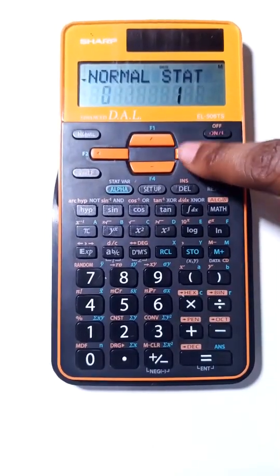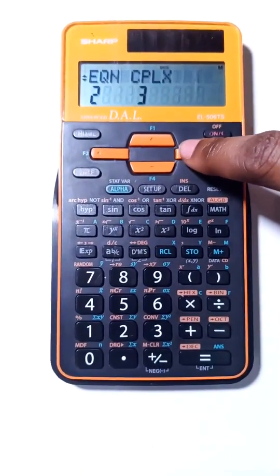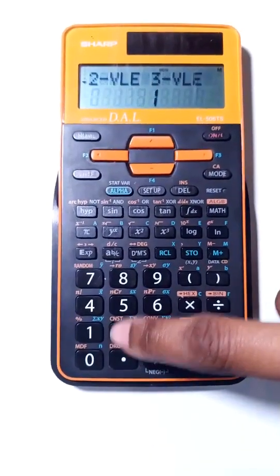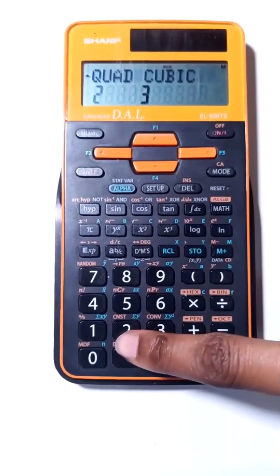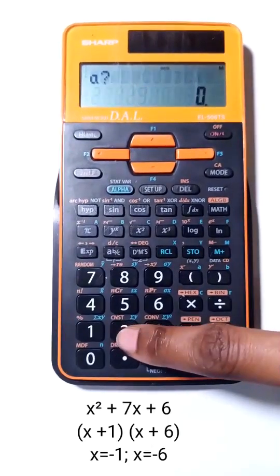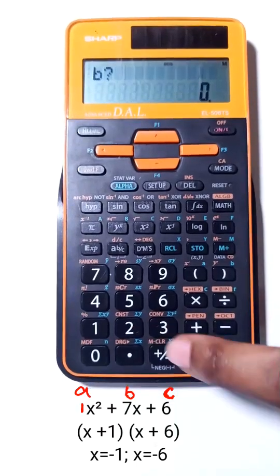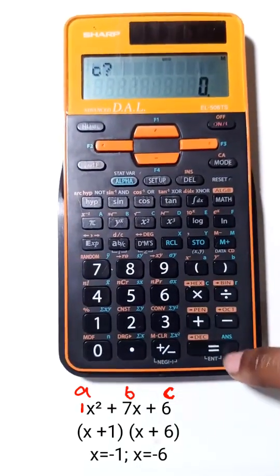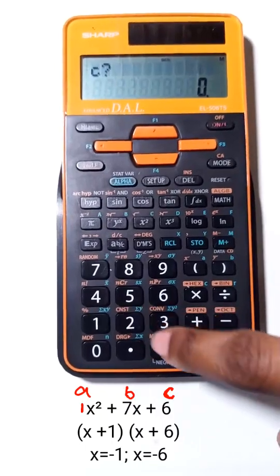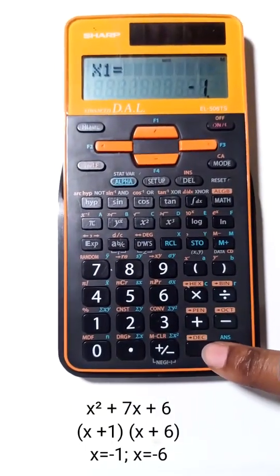Press mode. Use the arrow to go to the right. We go to equation. Press 2. Use the arrow to go to the right. Quadratic equation 2. A is equal to 1, equals sign. B is equal to 7, equals sign. And C is equal to 6, equals sign. So x is equal to negative 1 and x is equal to negative 6.